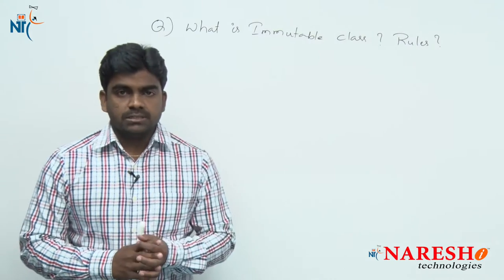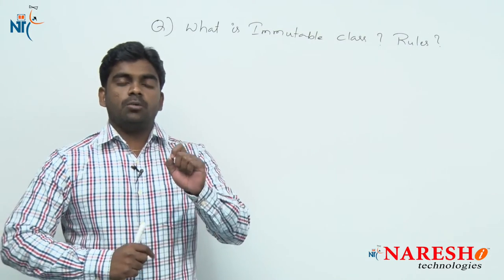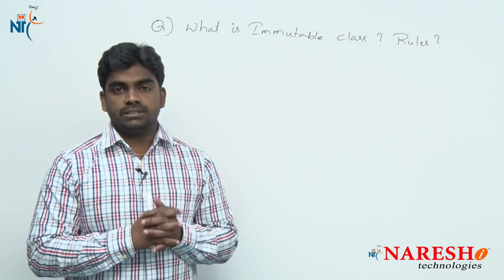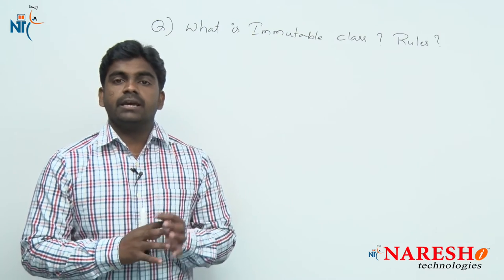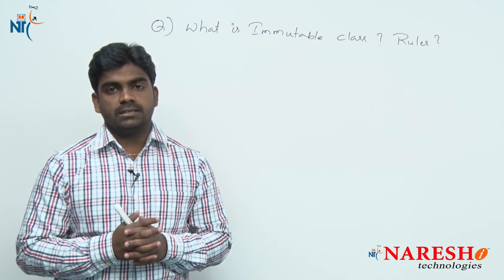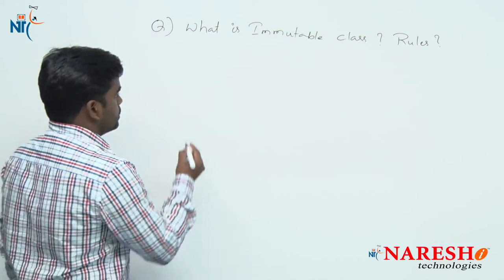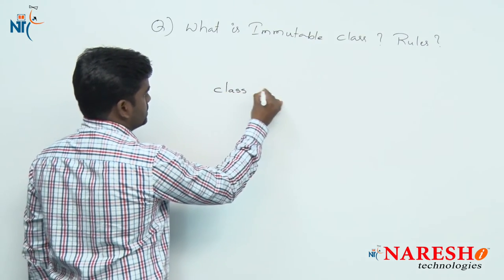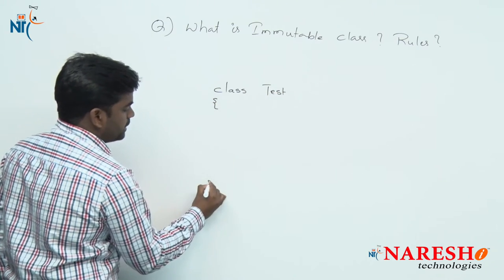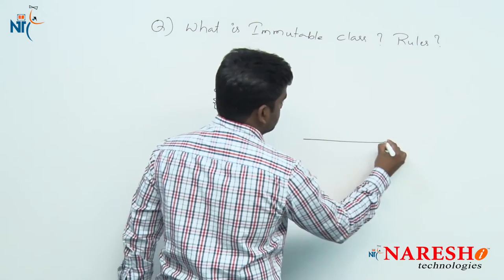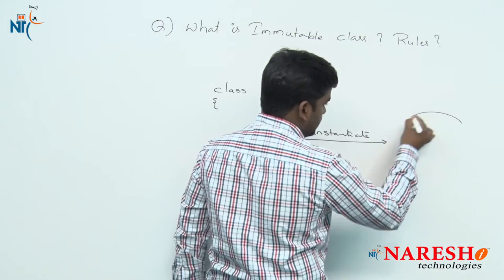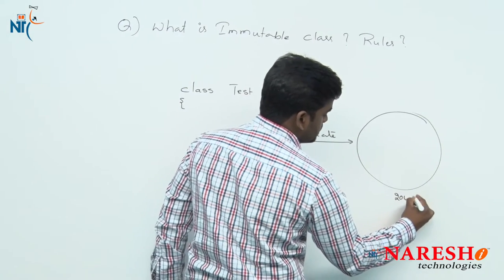What is an immutable class? Once an object has been created for a particular class, the state cannot be changed. Take any class, for example a class called 'Test'. If you instantiate this class, an object will be created and inside that, state will be created.